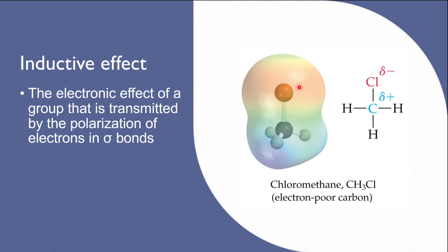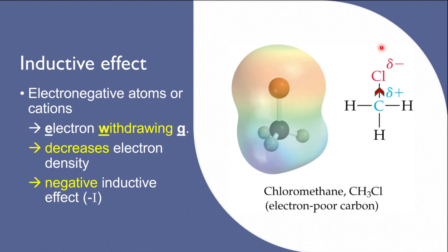Inductive effect affects the ability of a chemical group to stabilize or destabilize a molecule or ion through electron distribution. Electrons are drawn towards or away from the group, affecting the polarity of the molecule or ion. The inductive effect is represented by an arrowhead in the middle of the covalent bond, pointing in the direction of the displacement of electrons.